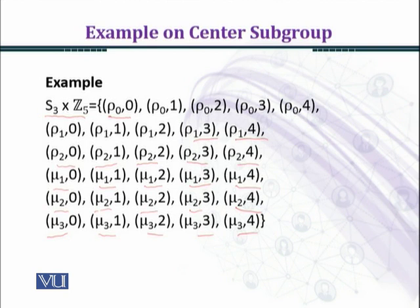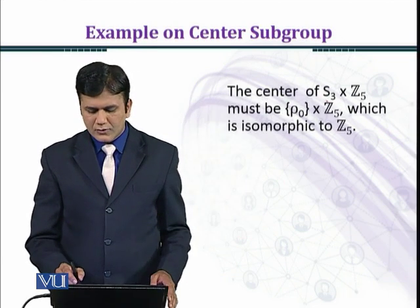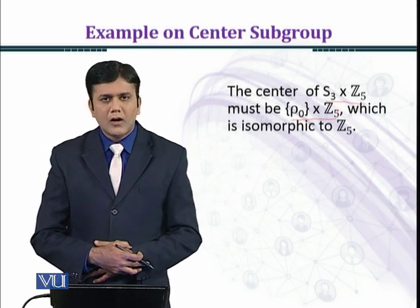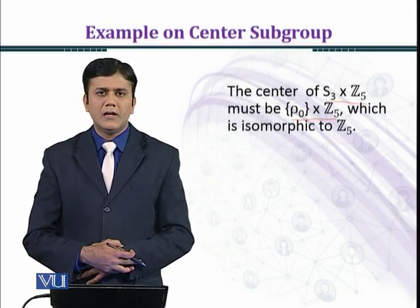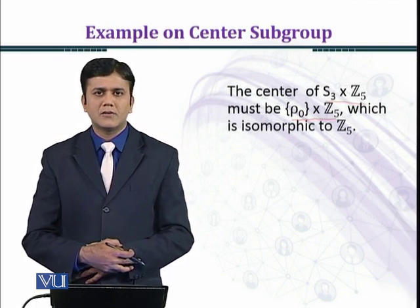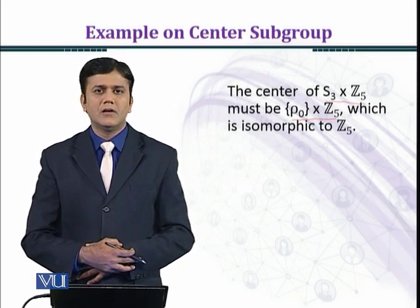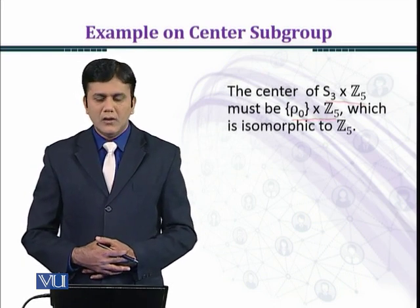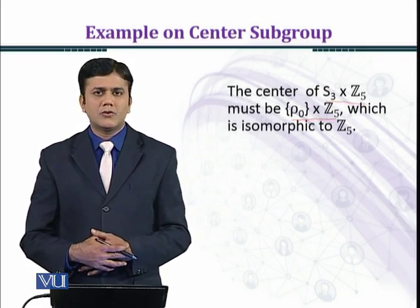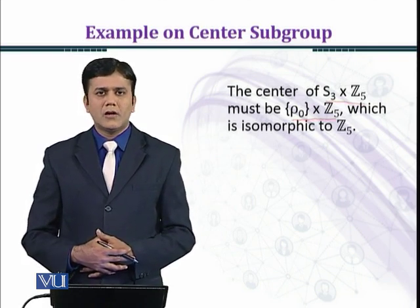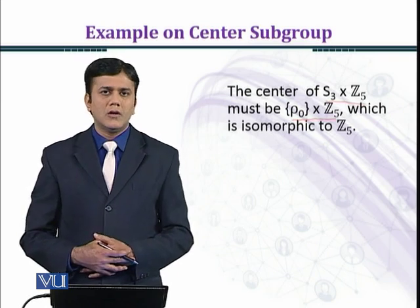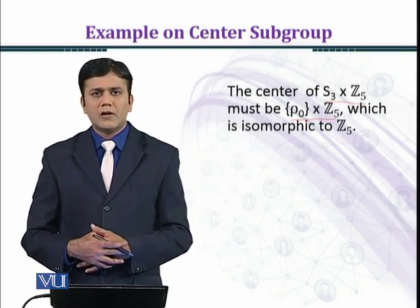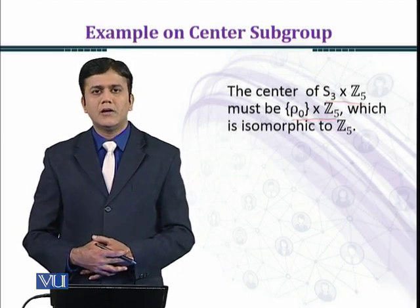The center of S3 × Z5 must be ρ0 × Z5. Here you can see that the first element ρ0 belongs to S3 and it commutes with every element of S3, because ρ0 is the identity element of S3. The second coordinates belong to Z5, and those elements are 0, 1, 2, 3, 4 under modulo 5.